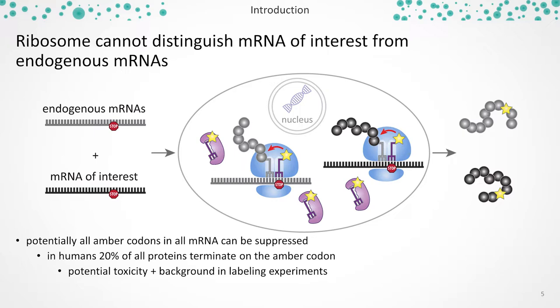So you could get a lot of C-terminally modified proteins which also carry the non-canonical amino acid. In fluorescent labeling studies, they will also show up with this label, and they are also C-terminally extended, which can be toxic. So at the onset of my PhD, we were wondering whether we could make translation orthogonal so that only the mRNA of our protein of interest is translated with an expanded genetic code.